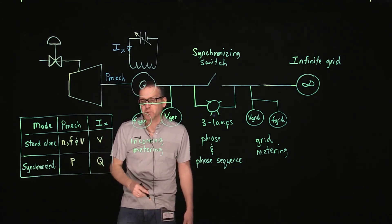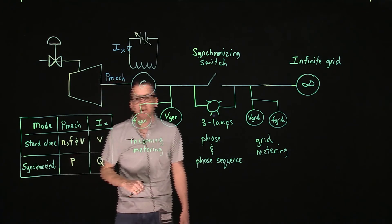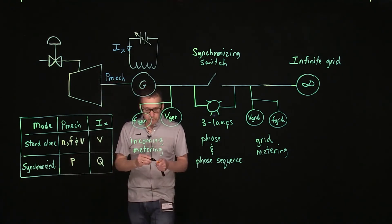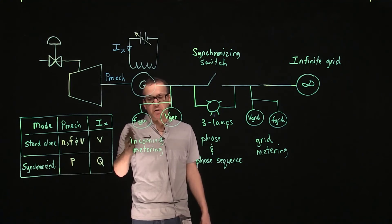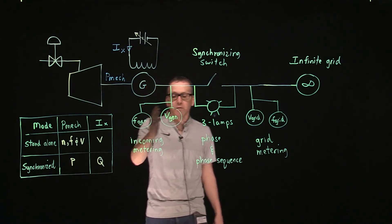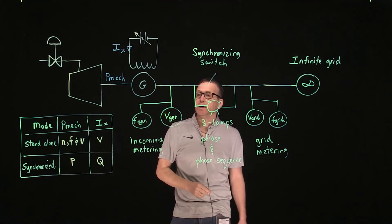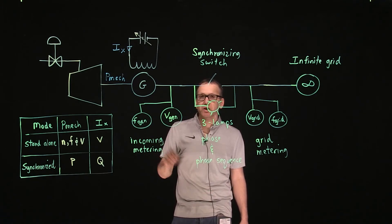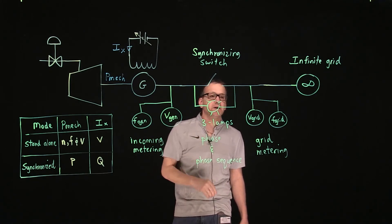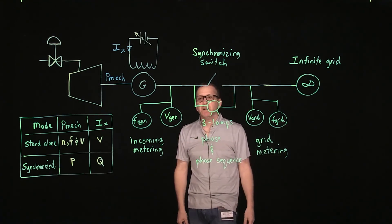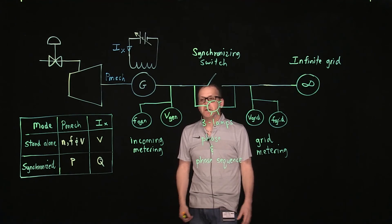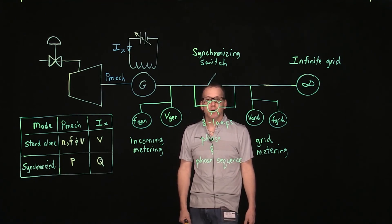The meter setup includes a frequency meter to measure the incoming frequency, a voltage meter to measure the voltage from the generator, the synchronizing switch, and two meters - one for the voltage of the grid and one for the frequency of the grid. These devices allow us to monitor all the conditions required to synchronize the generator to the infinite bus.